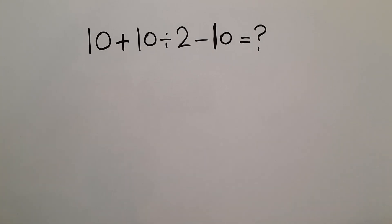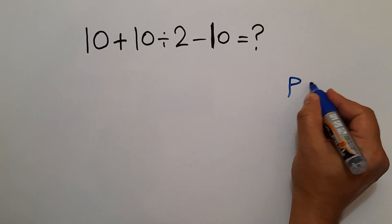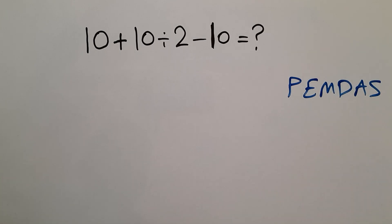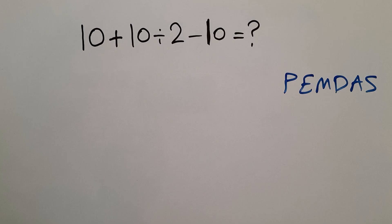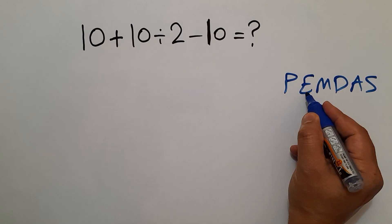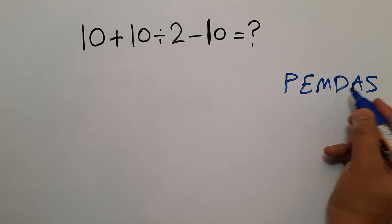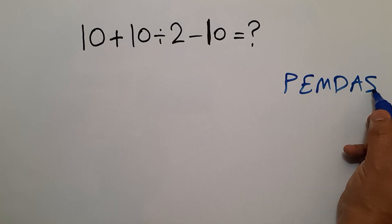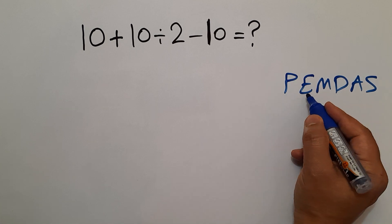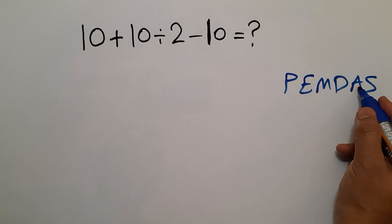According to the order of operations, which is PEMDAS: P stands for parentheses, E stands for exponents, M and D stand for multiplication and division, and A and S stand for addition and subtraction. We first do parentheses, then exponents, then multiplication and division, and finally addition and subtraction.